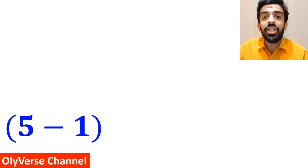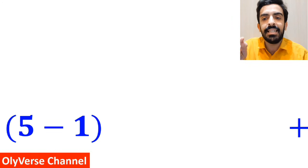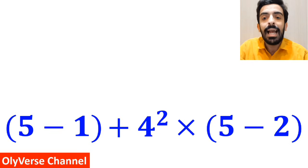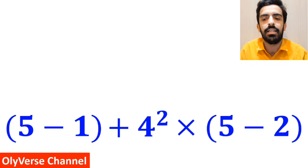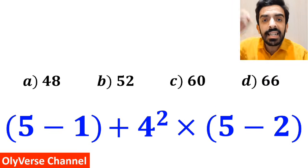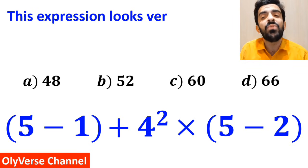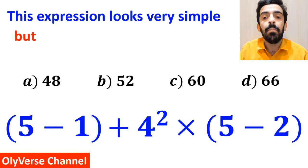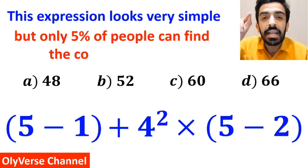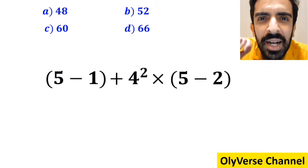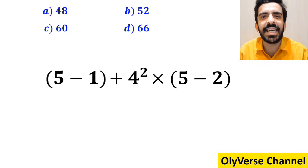What is the value of the expression (5 minus 1) plus 4 to the power of 2, multiplied by (5 minus 2)? Which option do you think is the correct answer to this question? This expression looks very simple, but only 5% of people can find the correct answer. Let's break it down and solve it together.